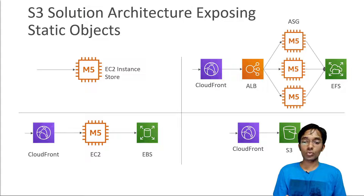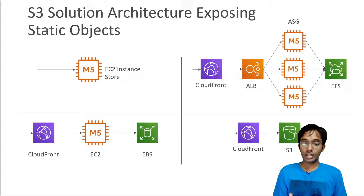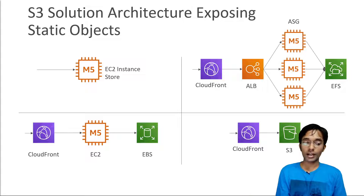The last kind of solution would be CloudFront directly in front of S3, and this works great, especially if you have static objects in S3 that are fairly large and don't need to be updated very often. As you can see, there are different ways of exposing static objects. There's no single right way — the preferred way is generally CloudFront with S3, but it still depends on your architecture, requirements, and application design.